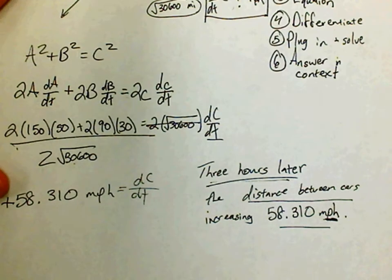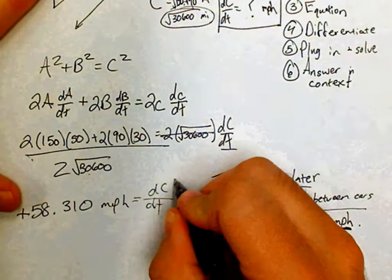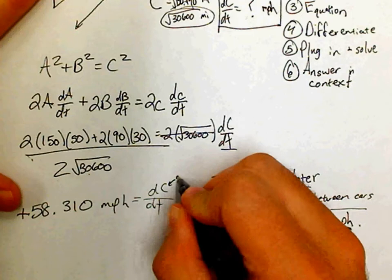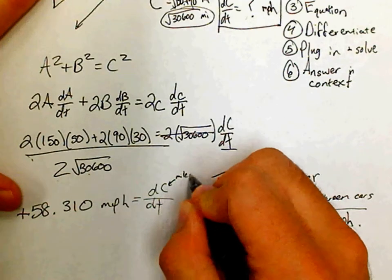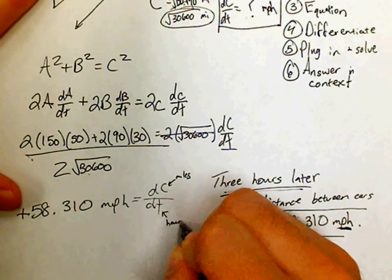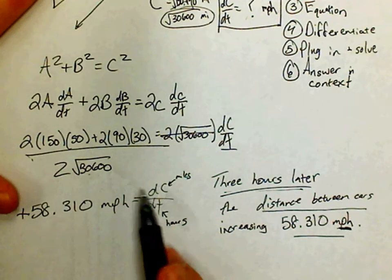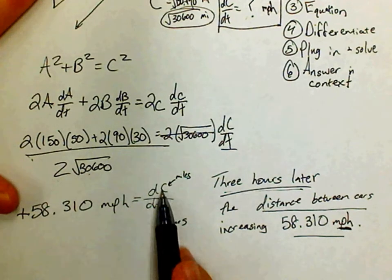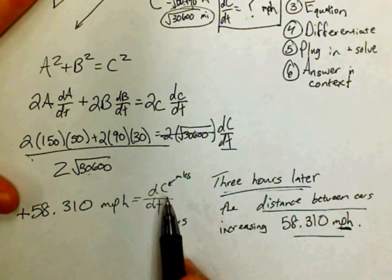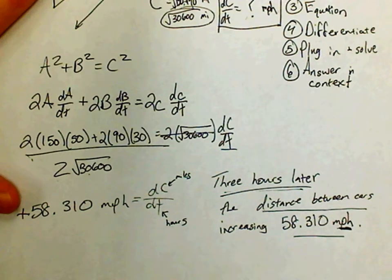In this case, dc/dt: c is measured in miles and t is measured in hours, so the units are miles divided by hours — miles per hour. You can verify units by looking at the rates you were given. That's it — good luck!